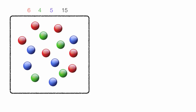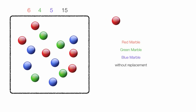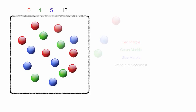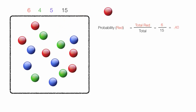Now I am going to pick a red marble, a green marble, and a blue marble without replacement, and I'm going to calculate the probability of that. The probability of picking a red marble is equal to 6 red marbles out of 15 marbles, which equals 0.40. Now I pick a red marble and I don't put it back — without replacement. Now I have 5 red marbles and 14 total marbles.